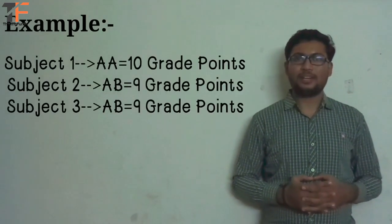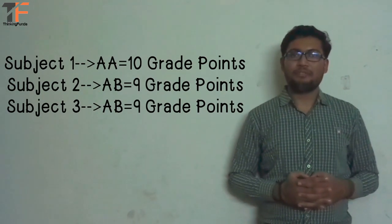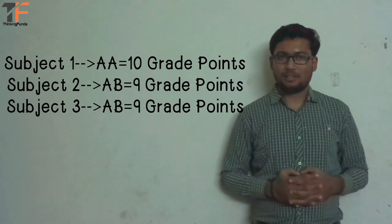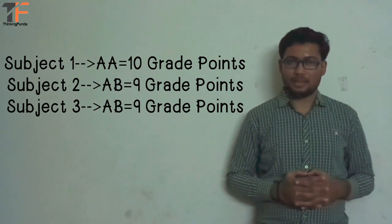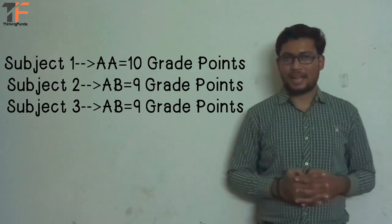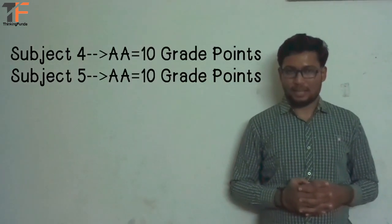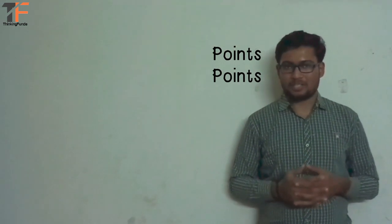Now let's understand the next example. Suppose you score AA grade in subject 1 then you will get 10 grade points. Similarly, if you score AB in subject 2 then you will get 9 grade points. In subject 3 you get AB grade, 9 grade points. In subject 4 AA, 10 grade points. Now all the grade points which you obtain in each subject are multiplied by the credit of that subject.